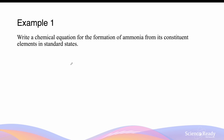Okay, let's go through a few examples to consolidate the ideas explained in this video. Write a chemical equation for the formation of ammonia. Ammonia is a covalent molecule with a formula of NH3. Ammonia in its standard state is a gas.